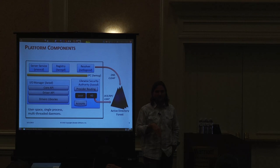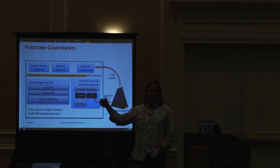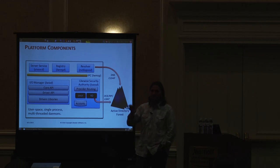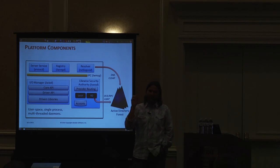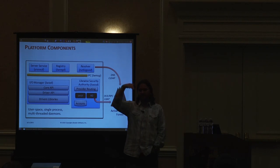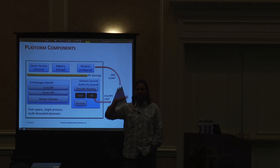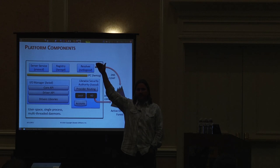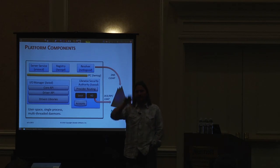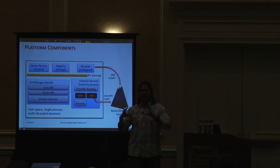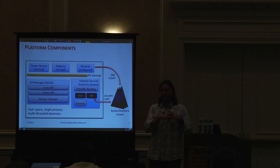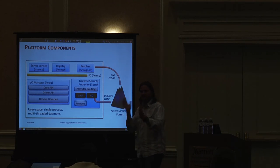Not only does the Active Directory provider maintain account information for a join to an individual AD domain, it can support multi-tenancy — joining multiple disparate Active Directory domains. The common use case is a network routing or proxy authentication device in a building with five floors, each a different company, where each network interface represents a computer object joined into that specific AD domain. Previously this was global state; now it's collapsed down into an individual per-domain context, supporting machine password changes individually for each domain.